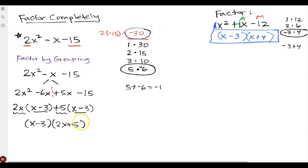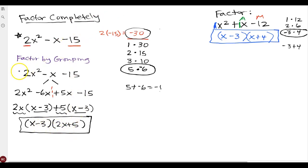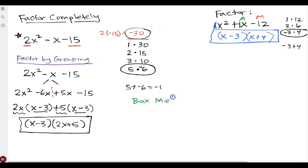If you foil that back out and multiply those together, you'll end up with what you started with — that's a good way to check your factoring. So that is factor by grouping. Another method is called the box method, which is really similar but gives it more of a visual feel.